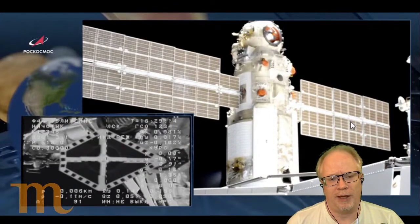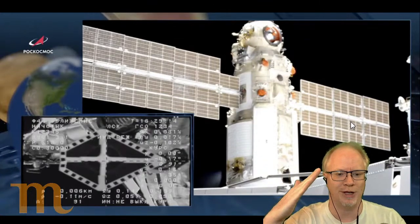This thing comes barreling in and docks properly. They tighten all the screws so it's nice and firmly attached. Then the cosmonauts start plugging in the wires so that the communications work. All of a sudden, the engines on Nauka that have been malfunctioning start firing inadvertently and unexpectedly. The space station has this new piece on it that suddenly is starting to fire its rockets, and it tilted the space station about 45 degrees out of its normal alignment.